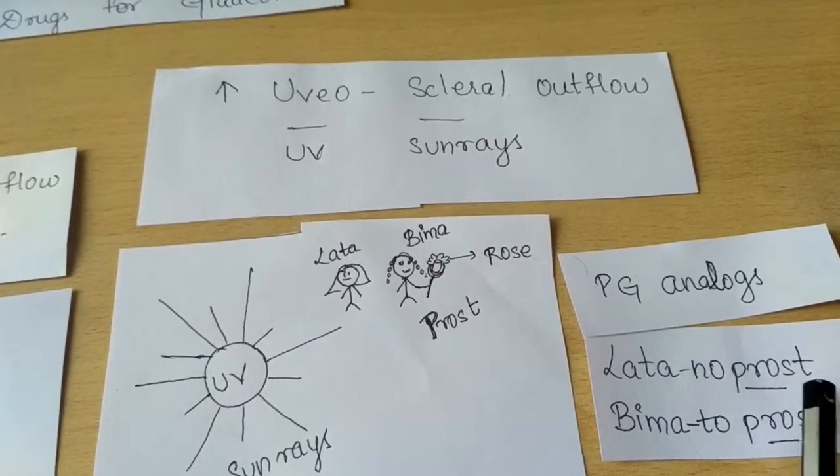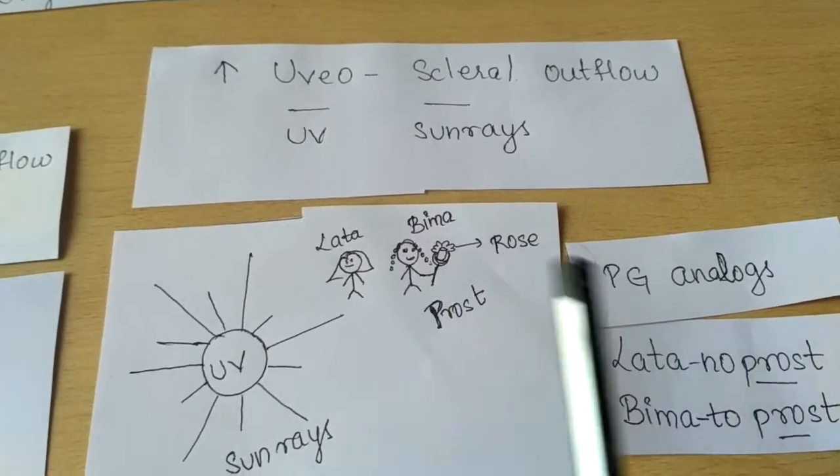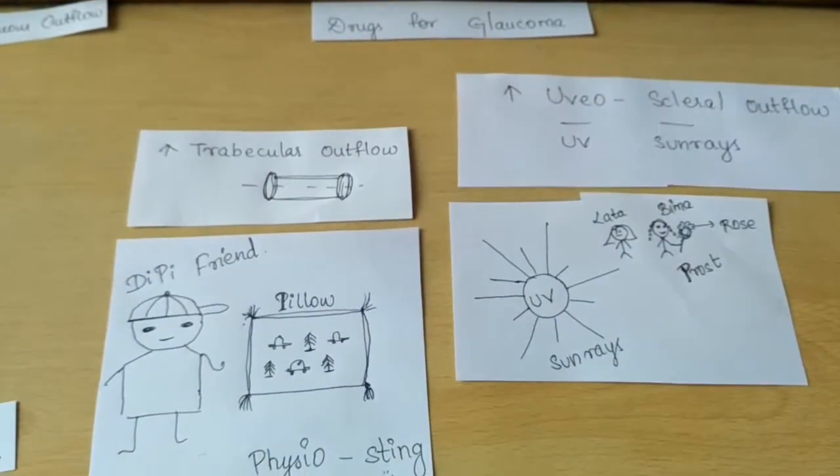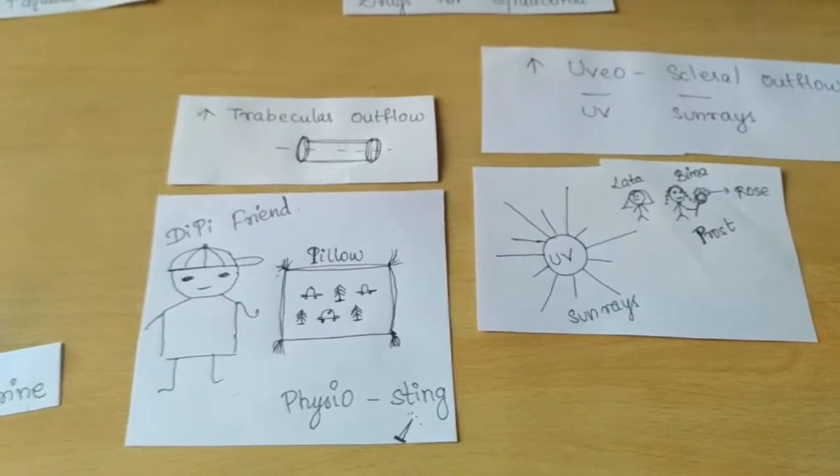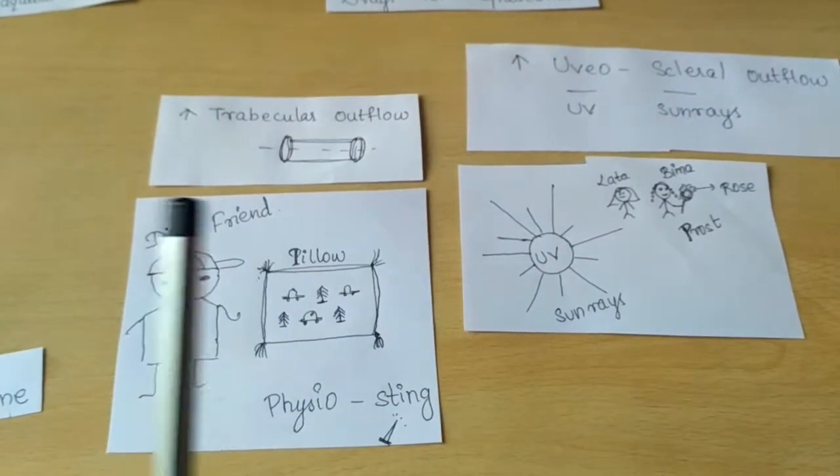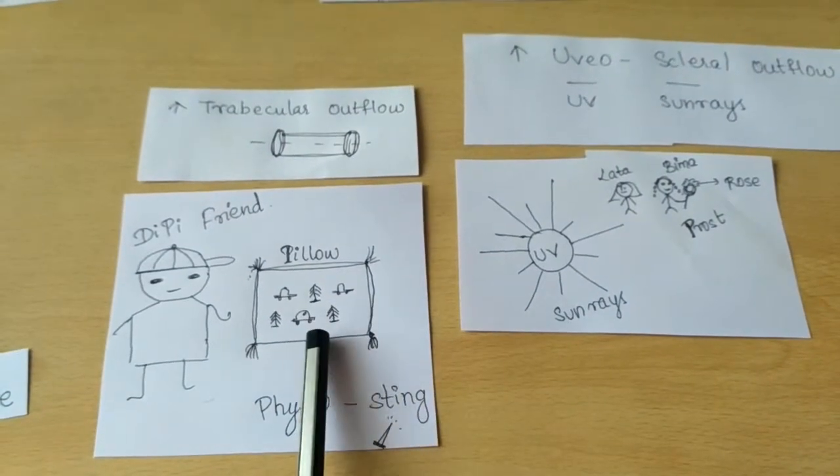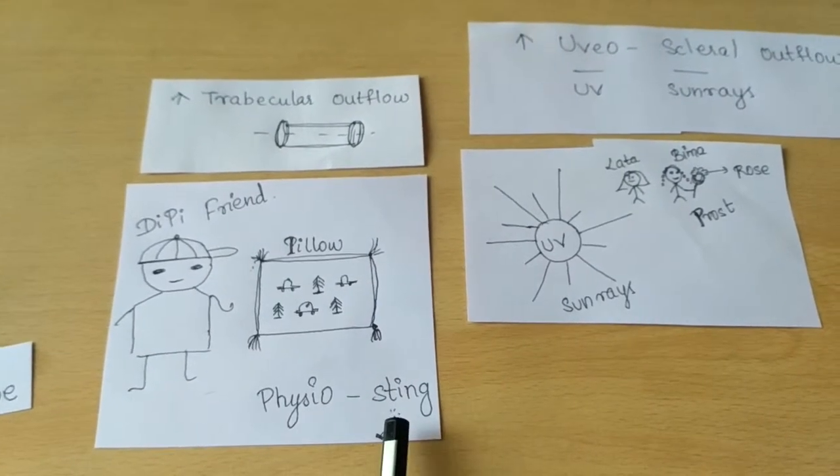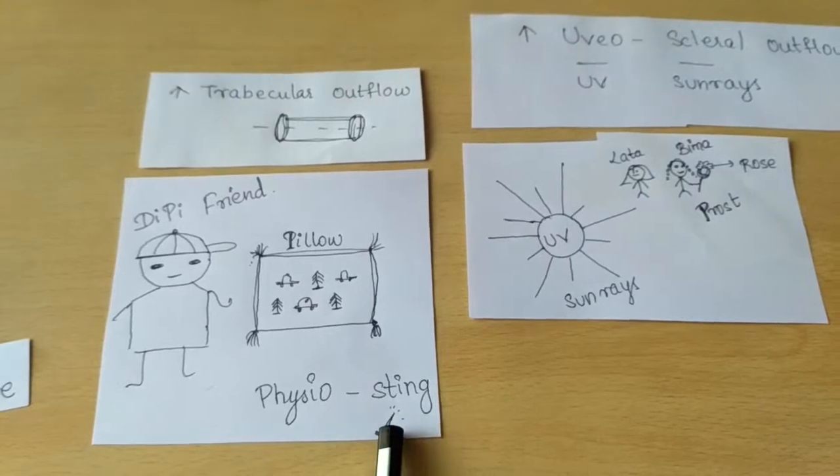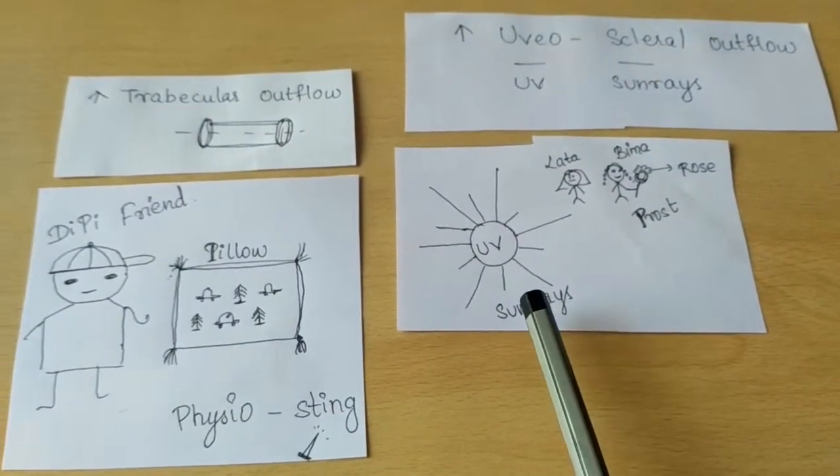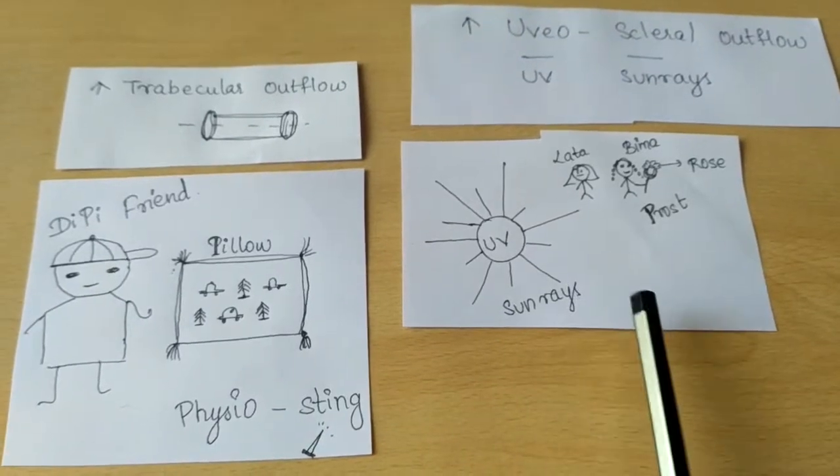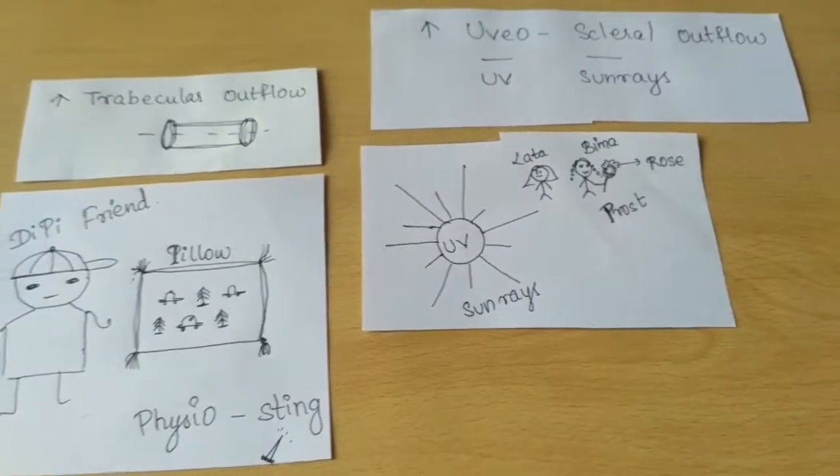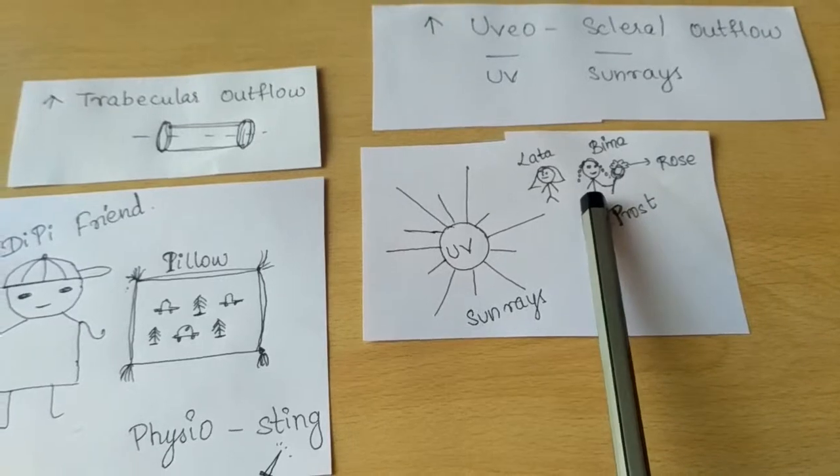So friends, these are the drugs which will increase the aqueous outflow: alpha-2 agonist dipivefrine, myotics where eyes constrict - pilocarpine, and physostigmine which stings during physio exercise. The other subclass is the UV rays, that is uveoscleral outflow, governed by two girls staying as a PG - PG analogues: latanoprost and bimatoprost.